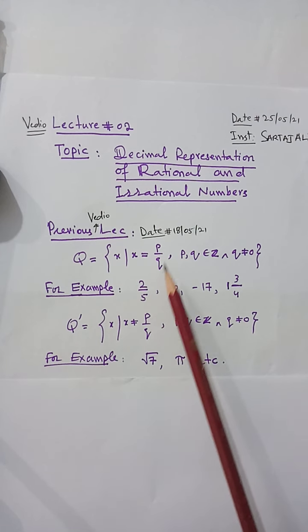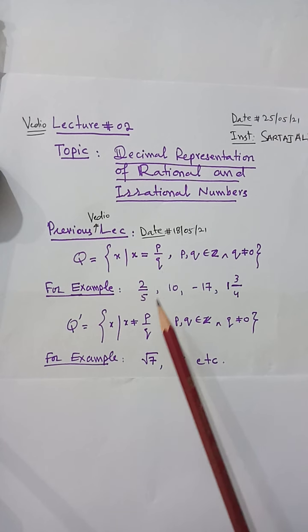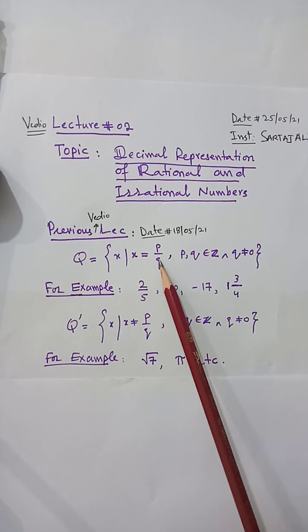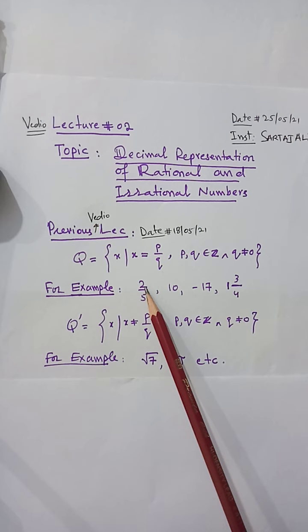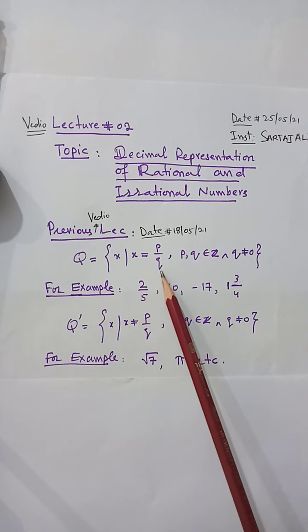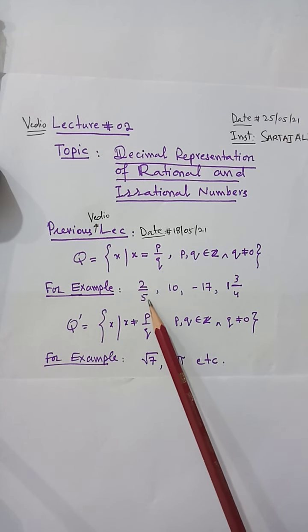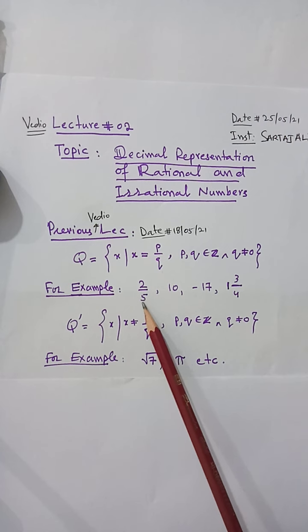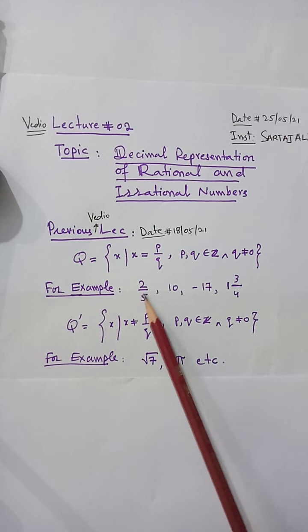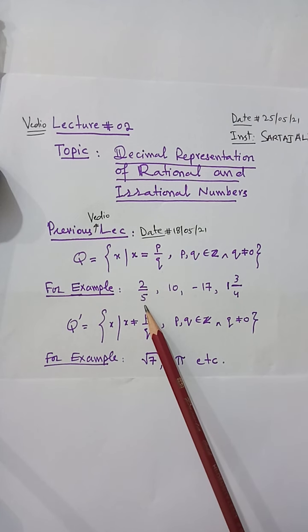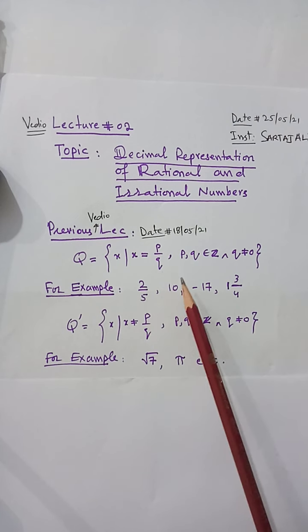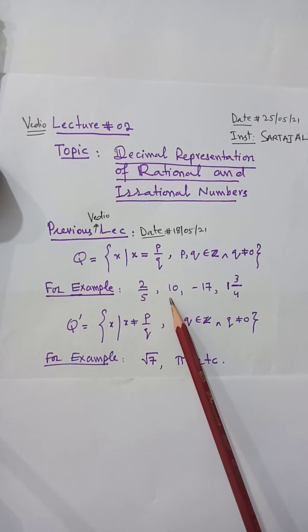For 2/5, you can clearly see it is in the form p/q. Here p is 2 and q is 5. Both 2 and 5 are integers, and 5 is obviously not equal to 0, so according to the definition, 2/5 is a rational number.